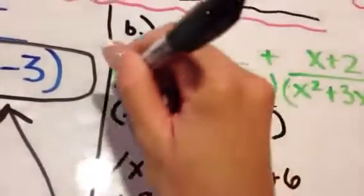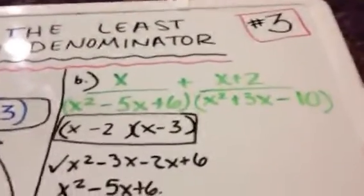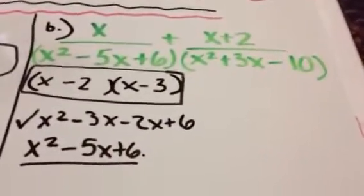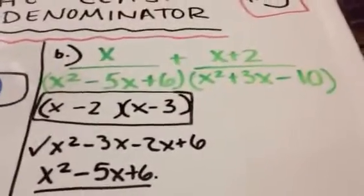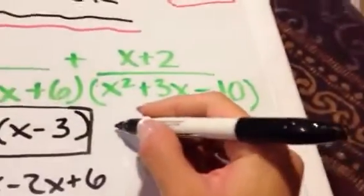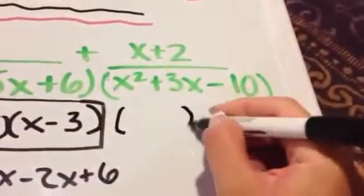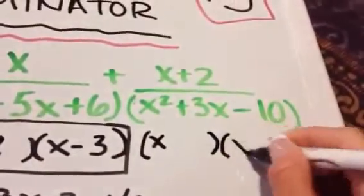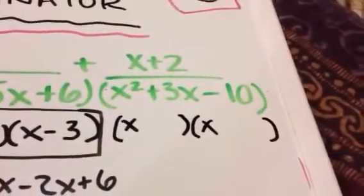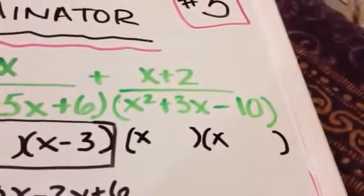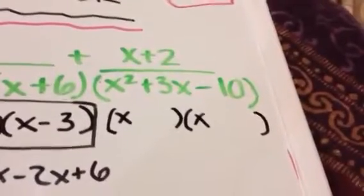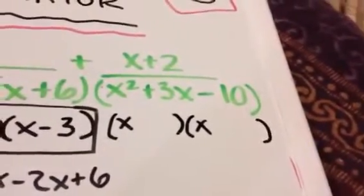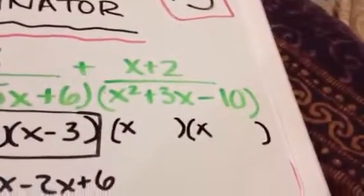Because we're trying to find the least common denominator, we need to see if we can factor to get any of the same terms from the first set. This also looks like it is ready to be factored. We are looking for a term that multiplies to equal a negative 10 but adds to equal a positive 3, and it looks like we can use negative 2 and positive 5.